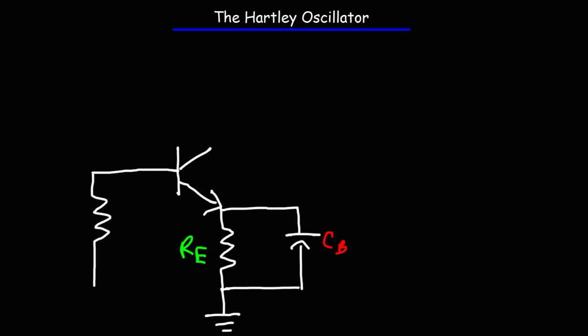Now we're going to have two other resistors, R2 and R1. These two resistors form a voltage divider network at the base of the NPN transistor.